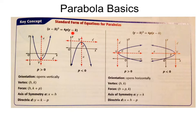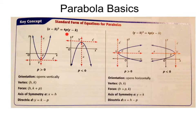First off, to recognize a parabola, you either have an x squared term or a y squared term, but not both. If your x term is squared, then you know it's going to open up or down vertically, and that depends on your p-value. If this 4p is positive, it's going to open up. If it's negative, it's going to open downward.